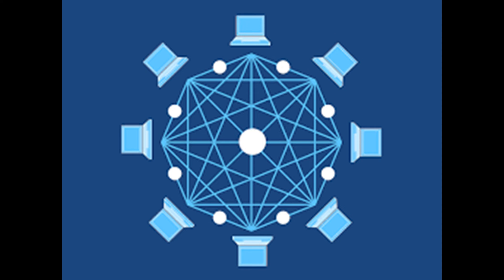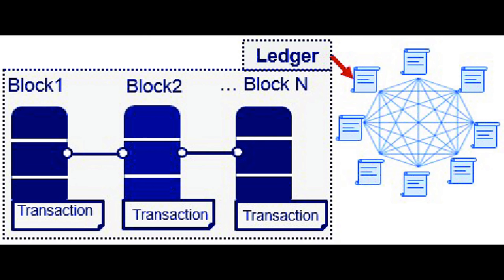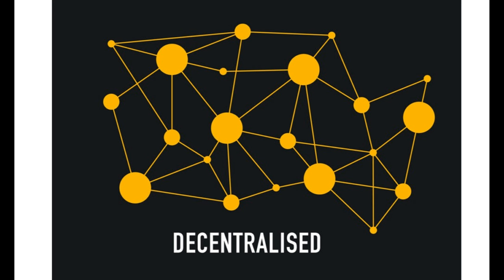The records stored in BigchainDB are tamper-proof and immutable, meaning that once a record is verified and stored in the database, it can never be altered or changed. That is the main aim and idea of blockchain for all the transactions that we do. The database is decentralized in a peer-to-peer network — there is no single point of command, no single point of communication, and no single point of failure.